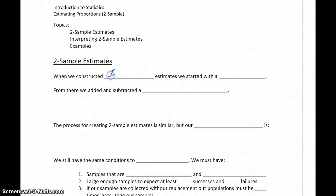When we constructed one sample estimates, we started with a point estimate. From there we added and subtracted some margin of error to construct a confidence interval. So if we're talking about proportions, we would start with p-hat, our sample proportion, add and subtract that margin of error to get that range of values, the upper and lower bounds for our confidence interval.